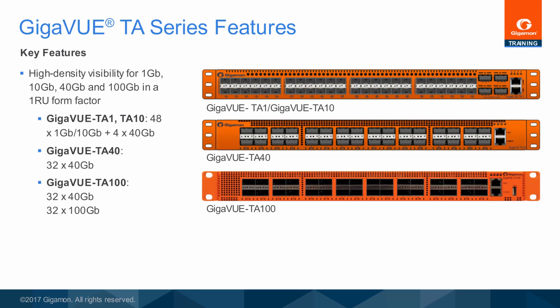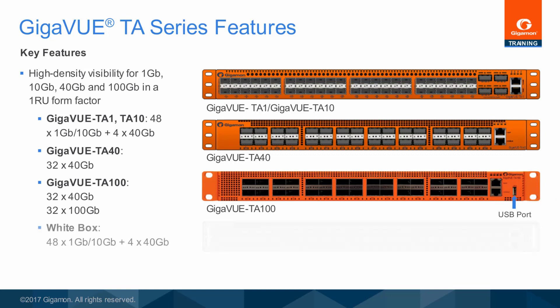In addition, the Gigaview TA100 also supports downloading a software image via a USB port on the front of the chassis. There is also Gigaview OS whitebox support, equivalent to other TA series nodes, with similar high-density availability to network owners who have large enough data centers that whitebox use is operationally viable.